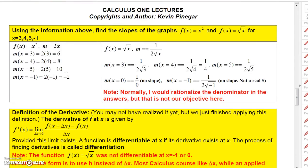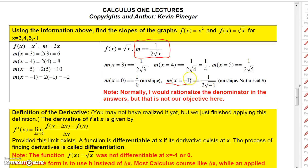Now we can evaluate slopes at specific values. For x²: at x equals 3 the slope is 6; at 4 it's 8; at 5 it's 10; at negative 1 it's negative 2. For √x using 1 over 2√x: at x equals 3 the slope is 1 over 2√3; at x equals 4 it's 1 over 2·2, which is one-fourth; at x equals 5 it's 1 over 2√5. At x equals 0 there is no slope since 1/0 is undefined. At x equals negative 1, that value is not even in the domain of √x, so the slope cannot be evaluated there. The definition of the derivative will be discussed in the next video.